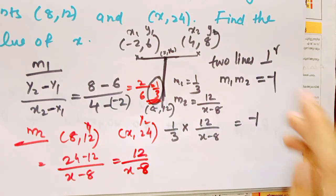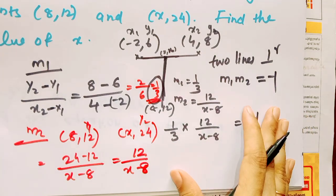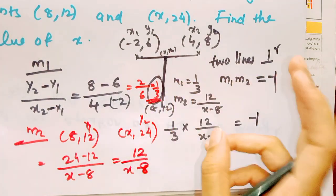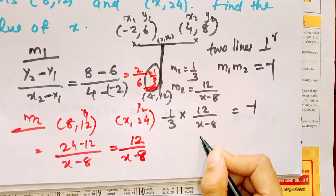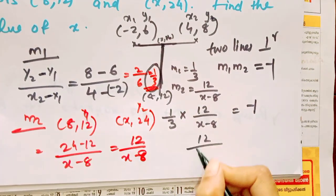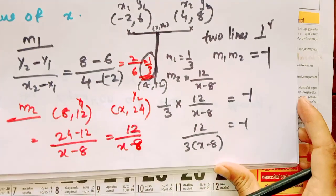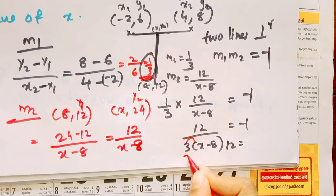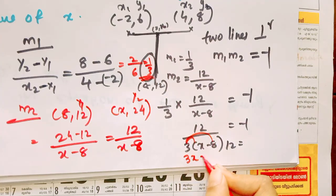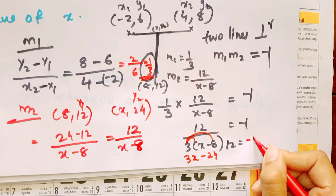We multiply the two slopes together and set equal to negative 1 for perpendicular lines. So 1 by 3 into 12 by x minus 8 equals minus 1. That gives us 3 into x minus 8 equals minus 1, meaning 3x minus 24 equals minus 1.